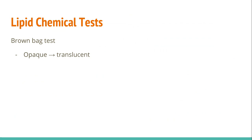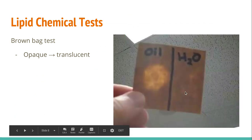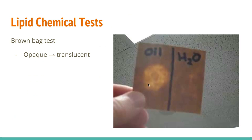When we want to test for lipids in a solution or in something we are eating, we use the brown paper bag test. You put a dot of whatever you're testing and dry it. If it dries opaque — like the water sample did — it means there are no fats present. But if it dries translucent, it means oils or fats have soaked through and changed the paper bag from opaque to translucent.